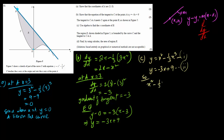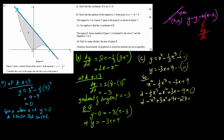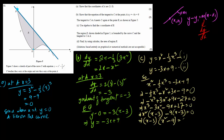Rearranging gives minus one-third x cubed plus x squared plus 3x minus 9 equals 0. Multiplying both sides by minus 3 gives x cubed minus 3x squared minus 9x plus 27 equals 0. Taking x squared as a common factor gives x squared times (x minus 3), and taking 9 common gives 9 times (x minus 3), so we get (x minus 3)(x squared minus 9) equals 0. Factorizing x squared minus 9 as a difference of squares gives (x minus 3)(x plus 3)(x minus 3) equals 0.